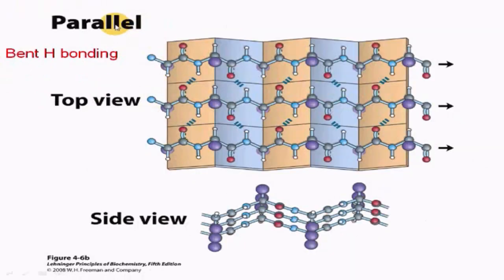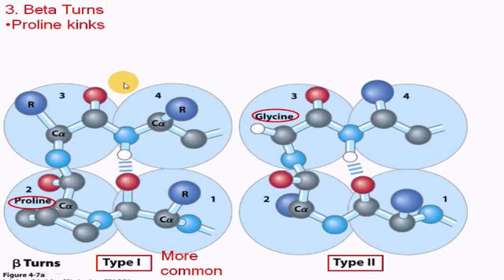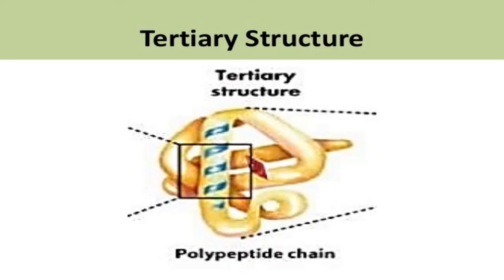Parallel beta sheets are less stable because the hydrogen bonding is bent. Beta turns are of two types: type one and type two. Due to the presence of proline there will be a kink; in type one proline is present, whereas in type two glycine is present.